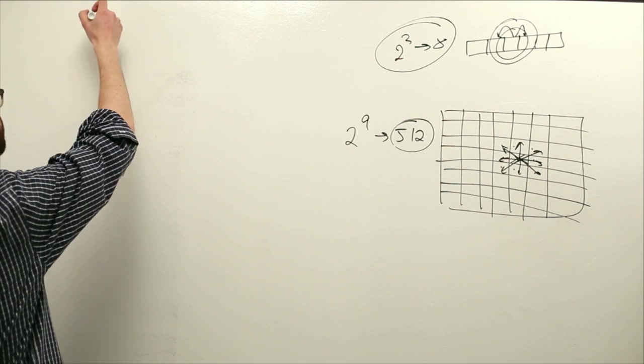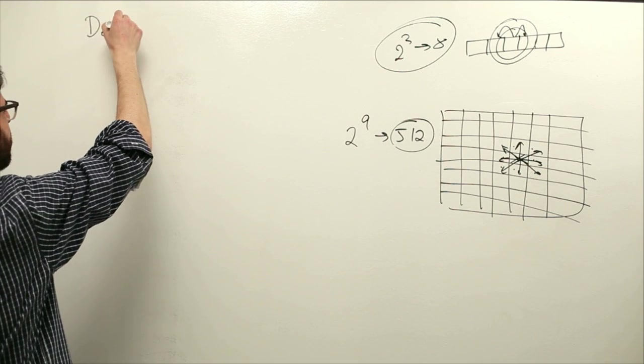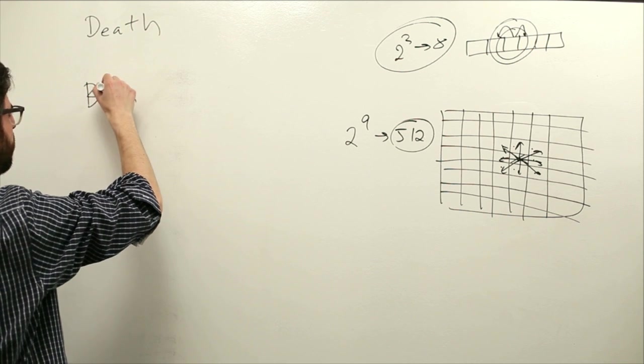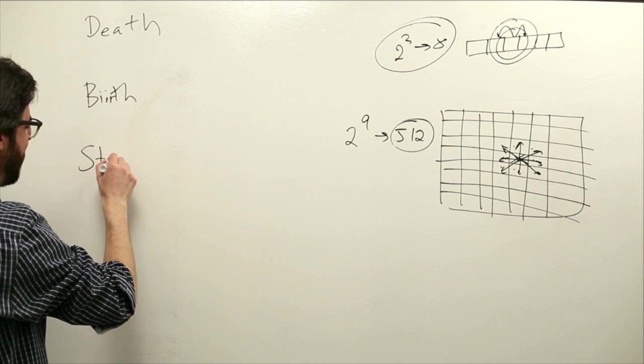So we have three key principles in the Game of Life: death, birth, and what we'll call stasis.